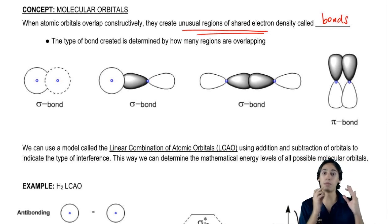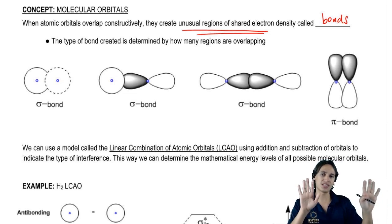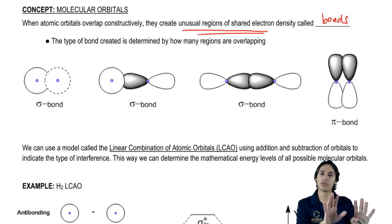Remember that a bond is just an area where you wouldn't expect to find electrons. Usually, according to the math, there shouldn't be electrons here. But these orbitals are interfering with each other constructively, so they're increasing the chance of finding electrons there.